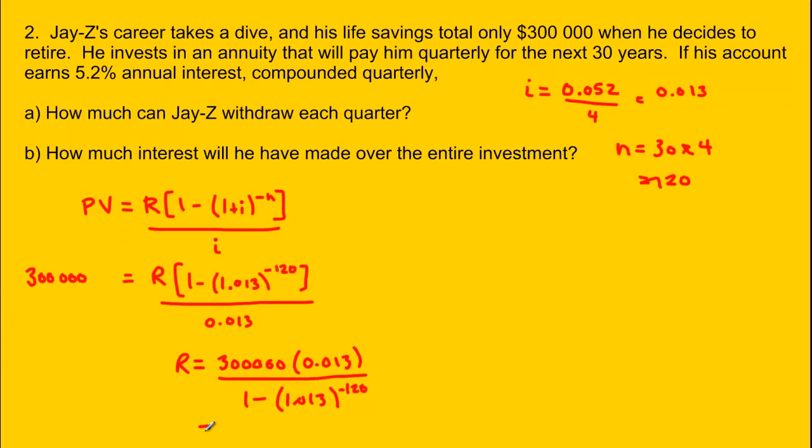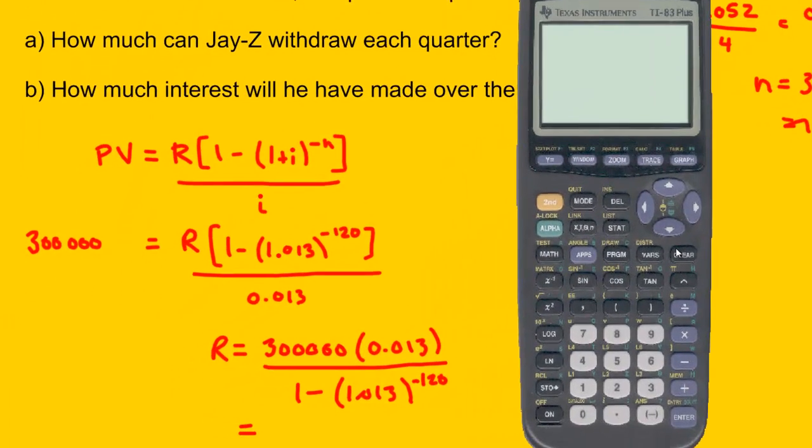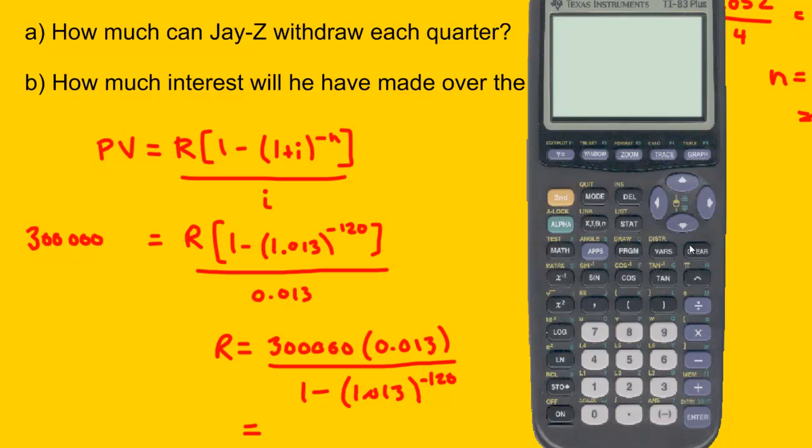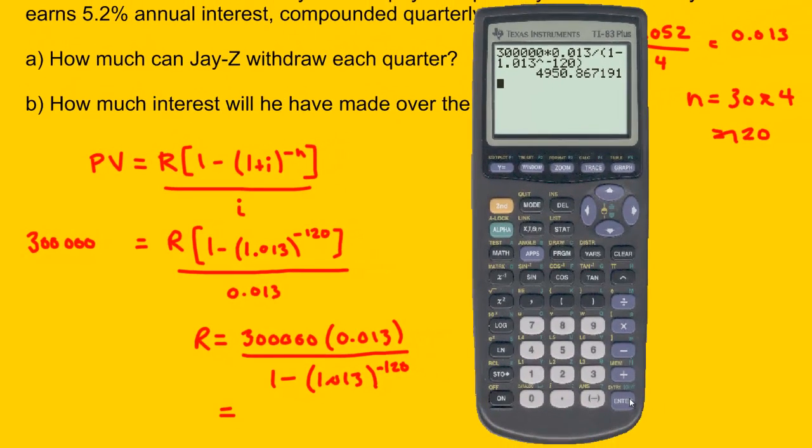And let's get our calculator out and see what this equals. So we can plug everything in at once here. We'll start with 300,000, multiply that by 0.013. And then we're going to divide that whole thing, and we'll put this in brackets: 1 minus 1.013 to the exponent negative 120. And we'll close the bracket. And what do we end up with here? $4,950.87.